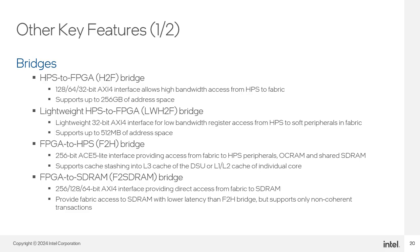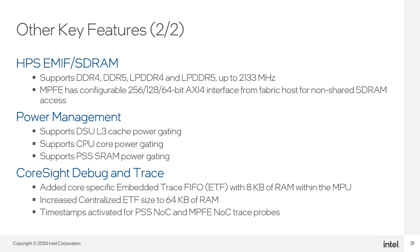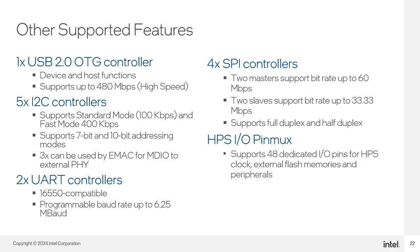The HPS-to-FPGA bridge allows HPS bus masters to access bus slaves in FPGA fabric. A configurable 32-, 64-, or 128-bit AMBA AXI data interface allows high-bandwidth HPS master transactions to FPGA fabric, supporting up to 256 GB of address space. The lightweight HPS-to-FPGA bridge supports up to 512 MB of address space, with a 256-bit FPGA-to-HPS interface. External SDRAM and flash memory interfaces support DDR4, DDR5, and LPDDR5 up to 2133 MHz with efficient power management and debug trace. Both USB 3.1 and USB 2.0 interfaces must be configured as device or host; mixing modes is not supported.